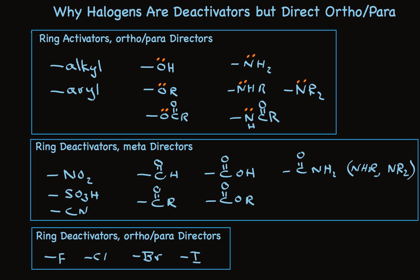Take a look. They all have oxygen or nitrogen, and there's always at least one unshared pair. For the ring-deactivators, this is never the case. And when we get down here to the halogens, well, they all have unshared pairs that can be used for resonance stabilization of the intermediate.